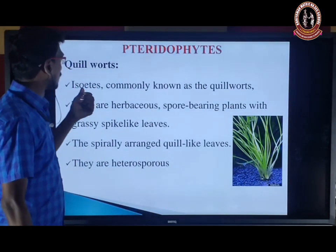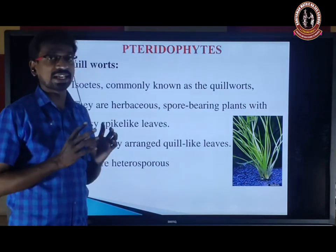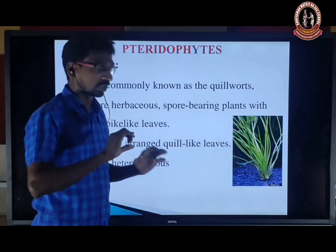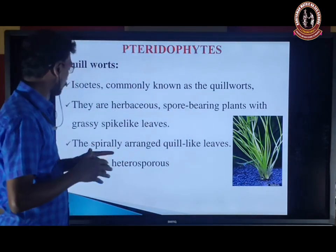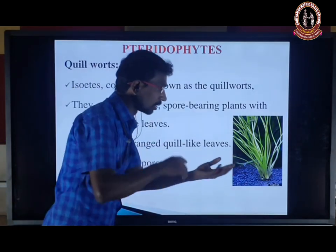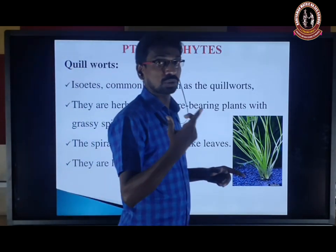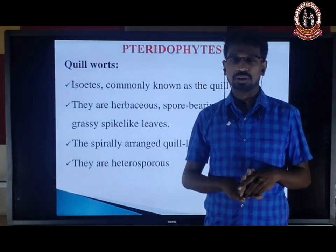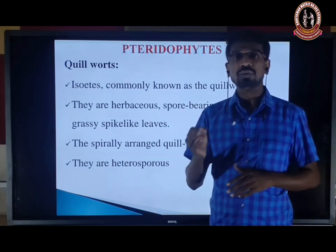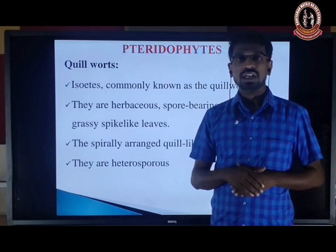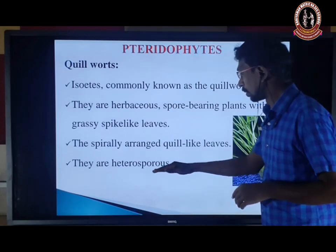Quillworts — Isoetes is commonly known as quillworts. They are herbaceous, spore-bearing plants with grassy, spike-like leaves arranged spirally in a quill-like manner. They are heterosporous, meaning two types of spores are formed: microspores and megaspores. Microspores are considered male spores and form the male gametophyte or male prothallus. Megaspores are considered female spores and form the female gametophyte or female prothallus.